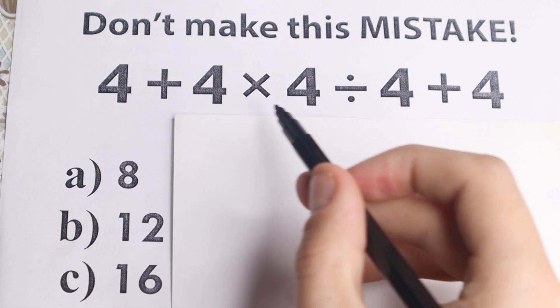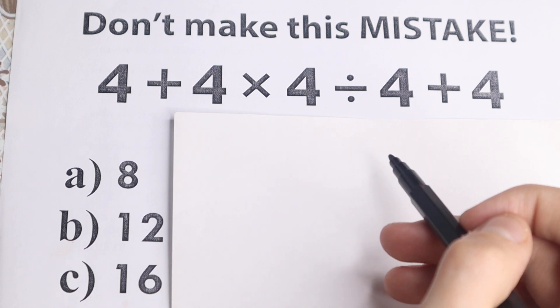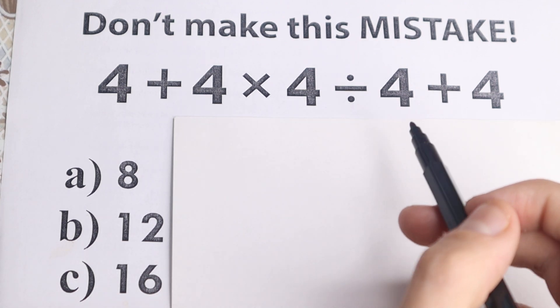So as you can see the same numbers, we have division, we have multiplication and addition. So a lot of students solve it in the wrong order of operation, they make this common mistake.